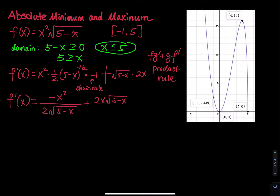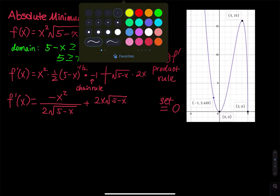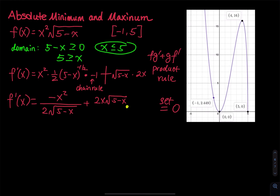We set that equal to 0. In order to solve for x, we need to get a common denominator. The common denominator will be 2 times square root of 5 minus x, so we multiply the top and bottom accordingly.